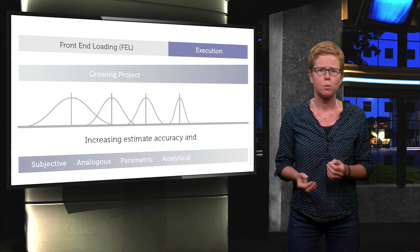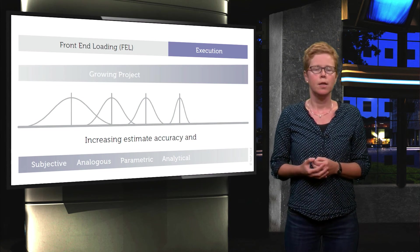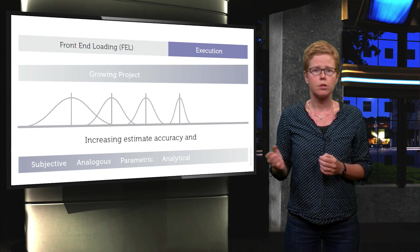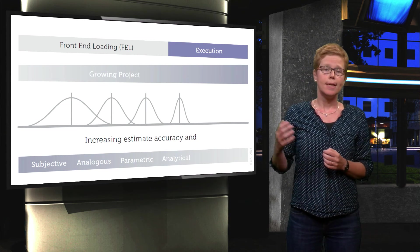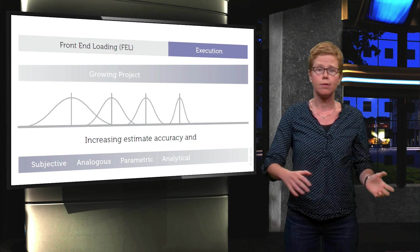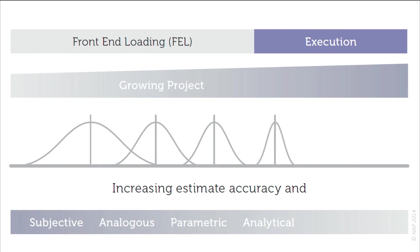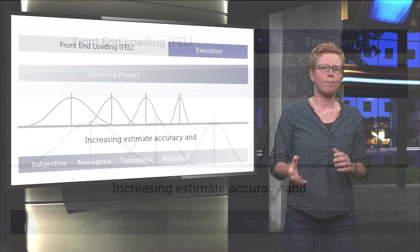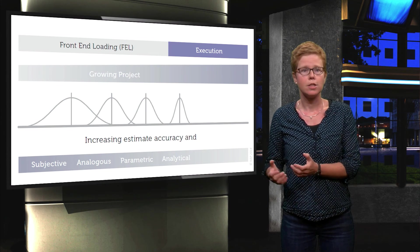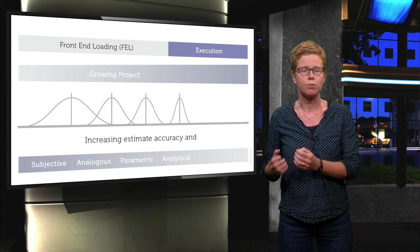So let's summarize what we have seen so far. Here we illustrate the development of the cost estimate accuracy and the estimating methods as the project matures from front end to execution. The base estimate grows and the range of the estimate decreases. In the early project phases, subjective and analogous methodologies are typically applied, while parametric and analytical methodologies are used when there is a more detailed project definition.